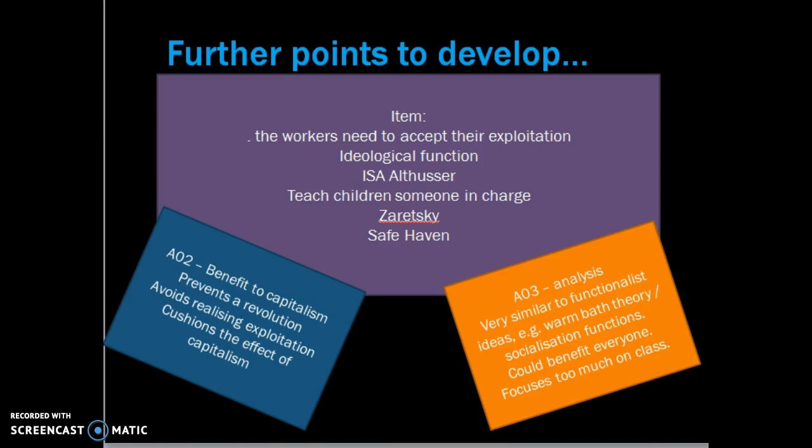For the second paragraph, another quote from the item could be: the workers need to accept their exploitation. This links into the ideological function. You can bring in Althusser and the ideological state apparatus — the idea that the family performs this function — and give examples, such as teaching children that there is always someone in charge, like their bosses when they go into employment. Zaretsky talks about the family being a safe haven. When you apply it, why does this benefit capitalism? It is preventing a revolution, ensuring people are not realising they are exploited or are passively accepting authority.